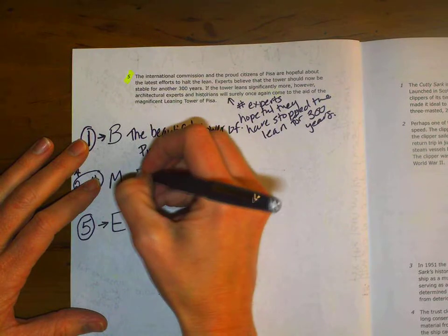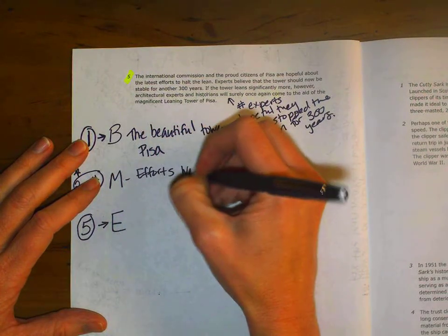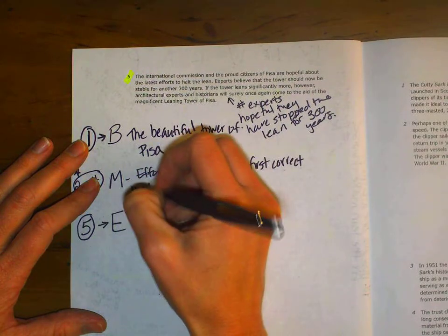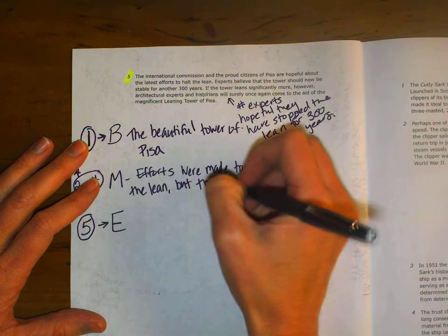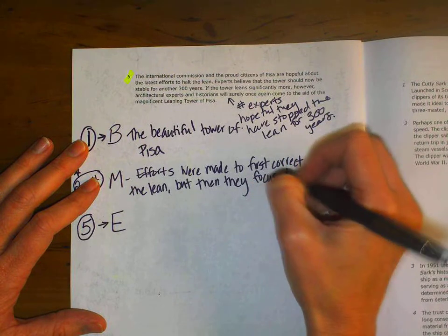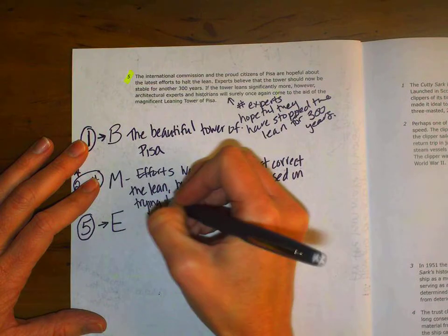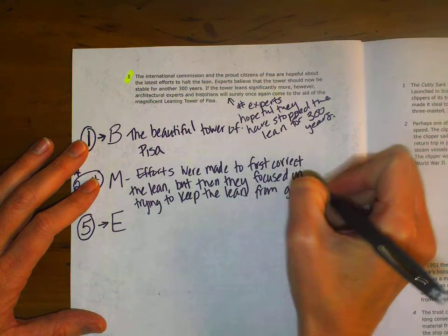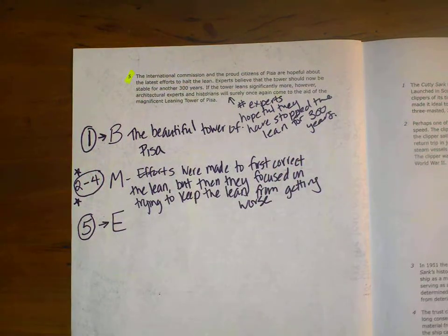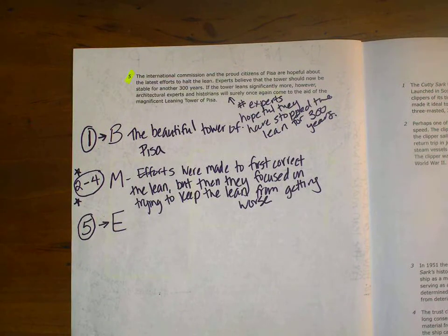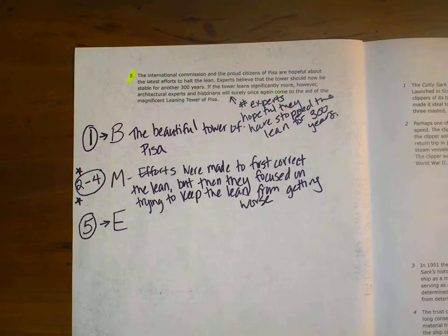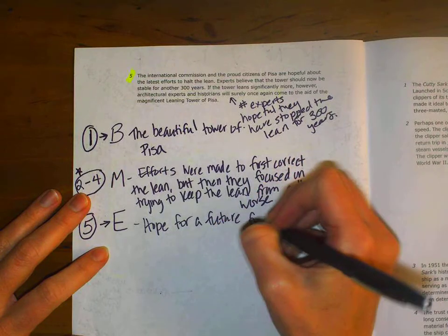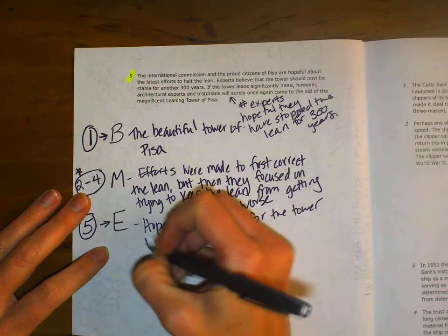but then they focused on trying to keep the lean from getting worse. And then lastly, the International Commission and the proud citizens of Pisa are hopeful about the latest efforts. This is that last paragraph, paragraph 5. And this is about hope for a future for the tower to continue.